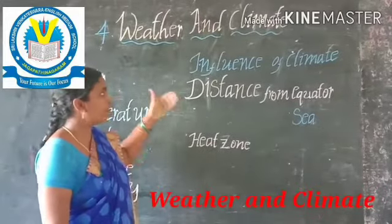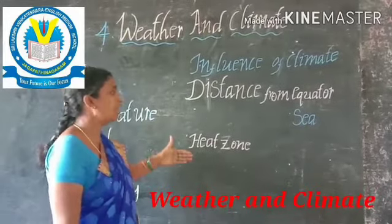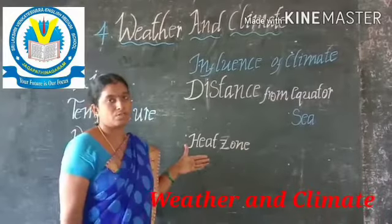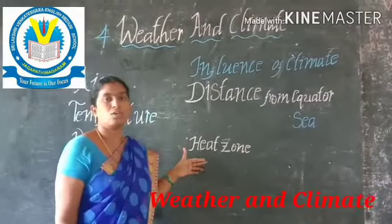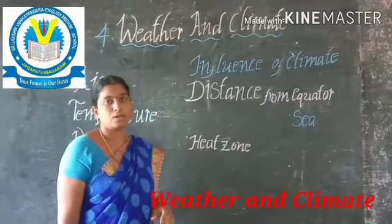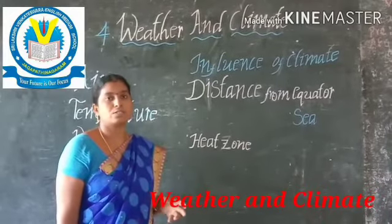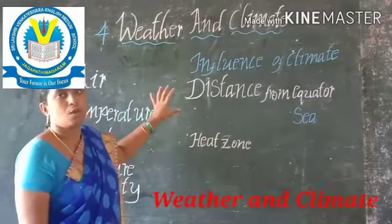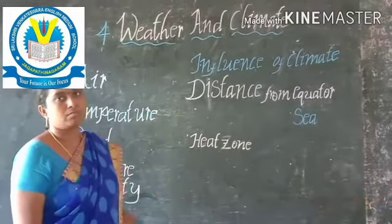After this we have three types of features: that is a torrid zone, temperate zone, and freezing zone. We can know more about all these torrid zones.